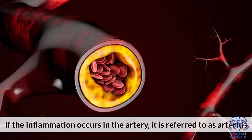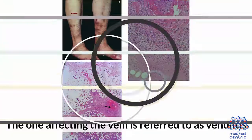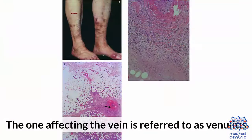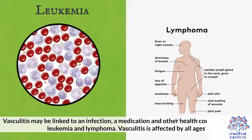If the inflammation occurs in the artery, it is referred to as arteritis. The one affecting the vein is referred to as venulitis. Vasculitis may be linked to an infection, medication, or other health conditions such as leukemia and lymphoma. Vasculitis is affected by all ages.